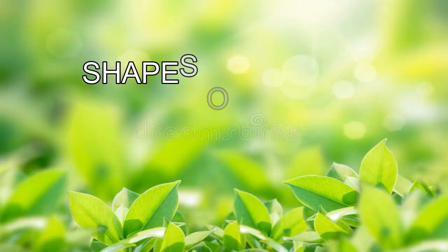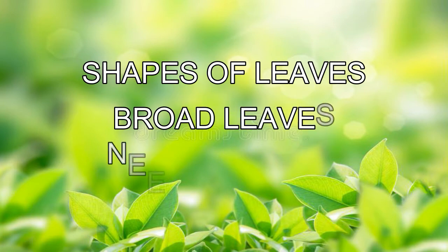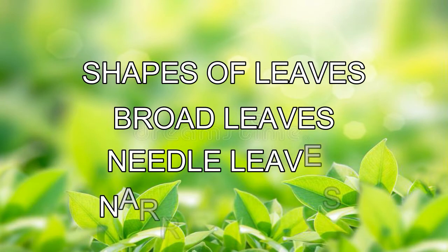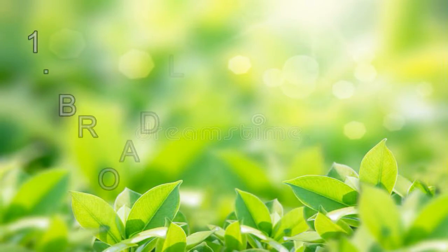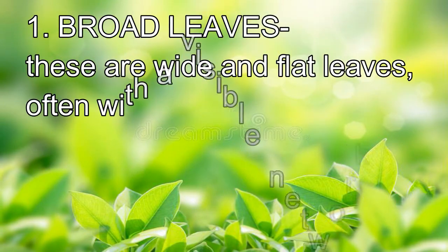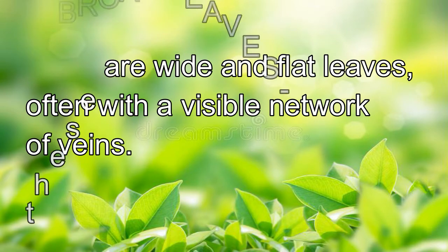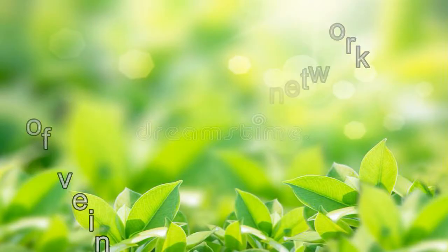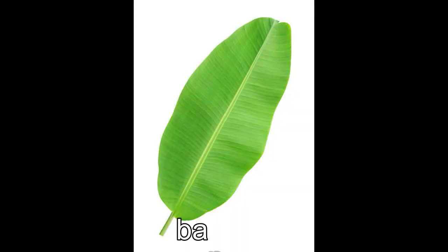Leaves have different shapes: broad leaves, needle leaves, and narrow leaves. Broad leaves are wide and flat, often with a visible network of veins. Examples of plants with broad leaves are mahogany, bird of paradise, and banana. Some gardeners use these types of plants for ornamental purposes.